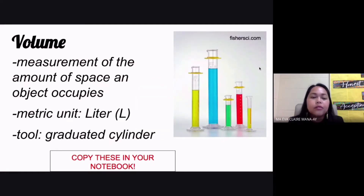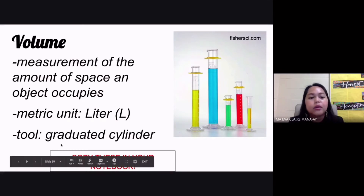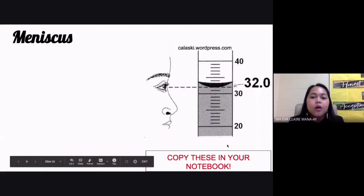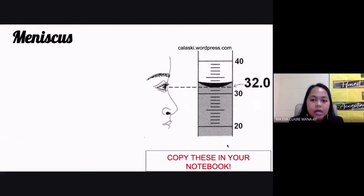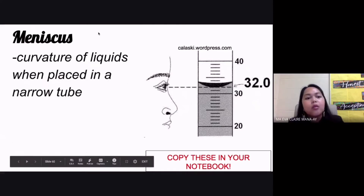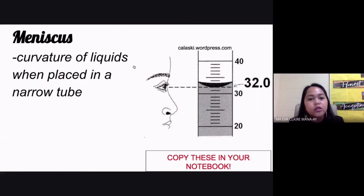Another quantity is volume, which is the measurement of the amount of space that an object occupies. The metric unit would be liter, represented by capital letter L. The tool we use more accurately than your beaker would be your graduated cylinder. Now remember that whenever you put your liquid inside a narrow tube, it is going to form a meniscus — the curvature of liquids when placed in a narrow tube.